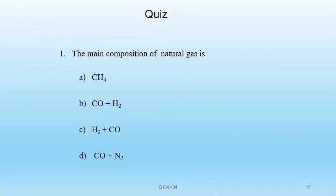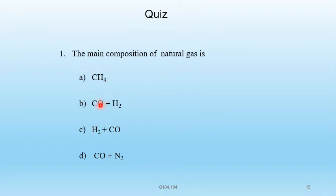Multiple choice questions: Question 1 — The main composition of natural gas is: A) CH4 (methane), B) CO + H2, C) H2 + CO, D) CO + N2. Natural gas mainly contains methane. So A is the correct answer.